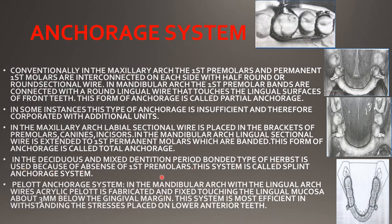In the deciduous and mixed dentition period, the bonded type of Herbst is used because of the absence of first premolars — this system is known as the splint anchorage system. The splint anchorage is used in deciduous and mixed dentition because the first premolars have not yet erupted.